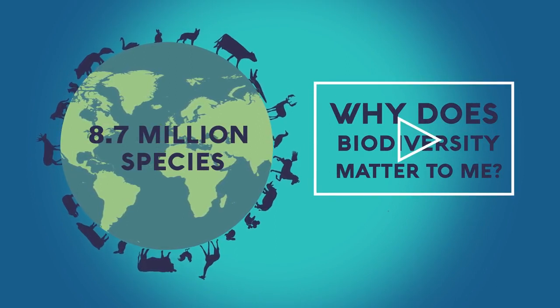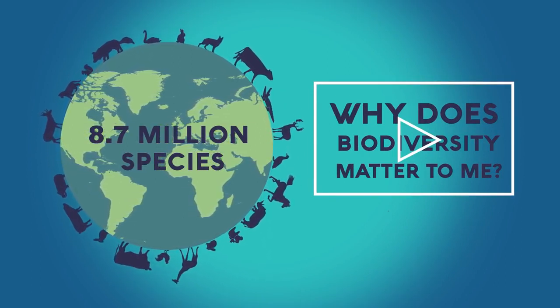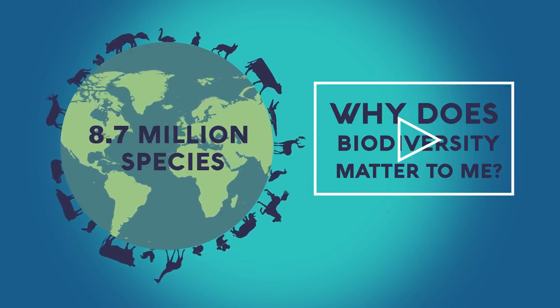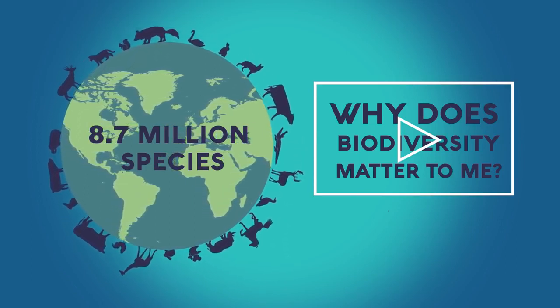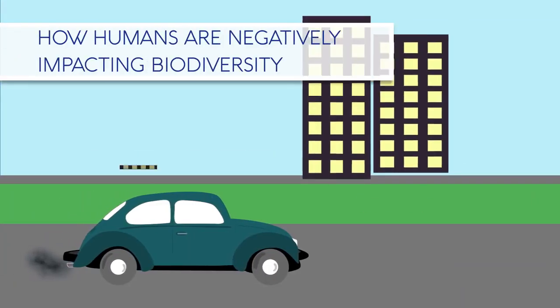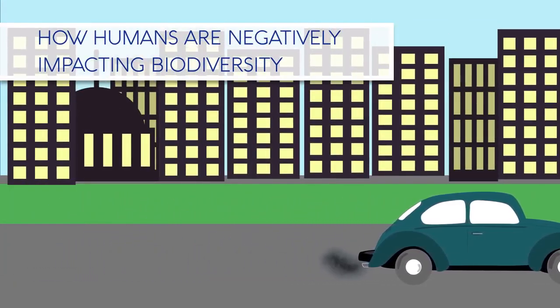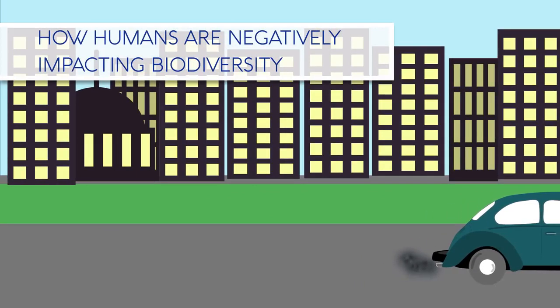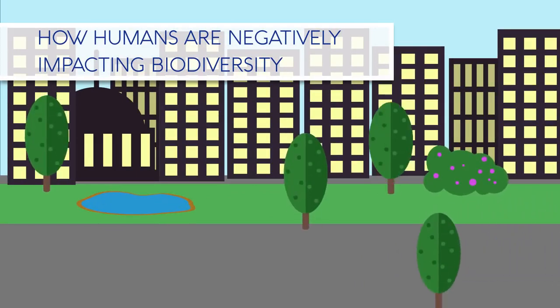The loss of one key species can have a detrimental impact on many levels — from other species of animals to plants to the physical environment, as shown by wolves. Human activities are reducing biodiversity, and our future depends upon maintaining a good level of it, so we need to start taking measures to try and stop the reduction. In this video, we are going to look at how humans are negatively impacting biodiversity.